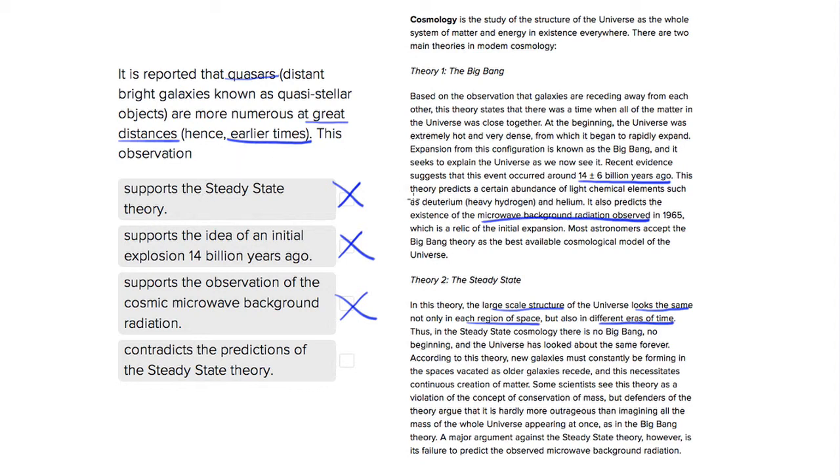That would presuppose that the universe has been changing. So the steady state theory in which the universe looks the same in different eras of time would be negated by the existence of these quasars. So choice four is our answer.